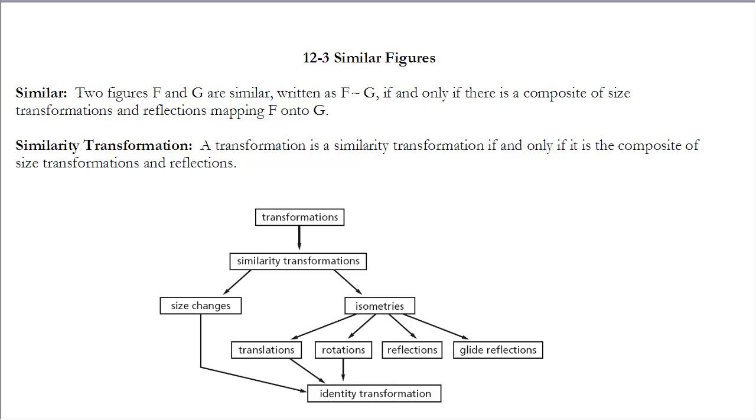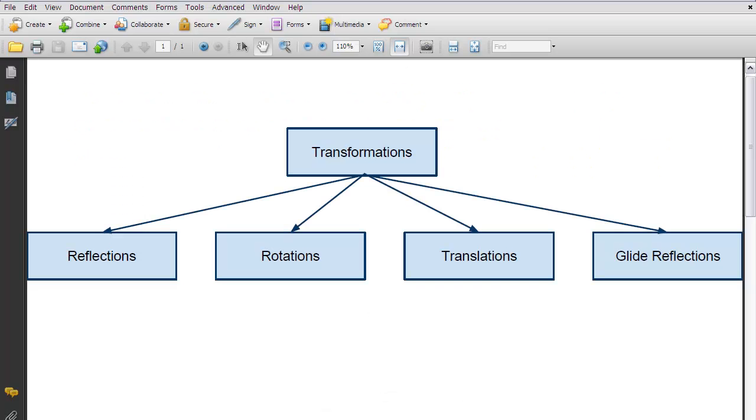To talk about similar figures, I want to go backwards a little bit. I want to go way back to chapter 4 when we were talking about isometries. And those were the first transformations that we looked at. So let's just go back and take a look at what that was. At that time, these were the only transformations that we knew of and that basically was reflection, rotation, translation, and glide reflection.